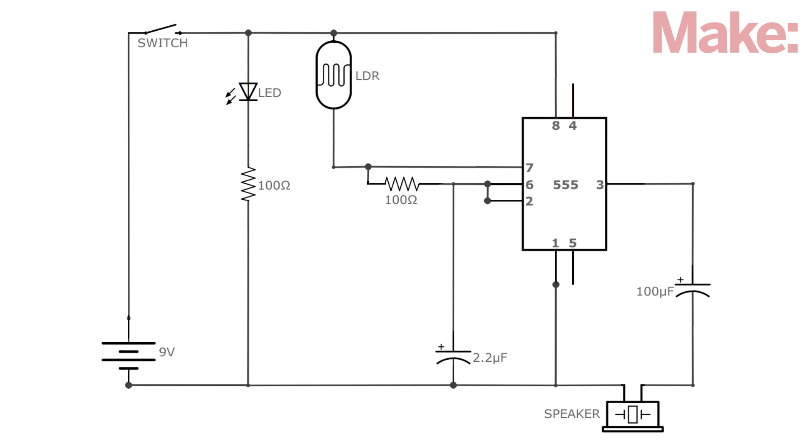The components that you can adjust slightly include the LDR and the value of the capacitor C1, which here is rated at 2.2 microfarads. Check out the project instructions for more details on how these two components affect the output of the synth.